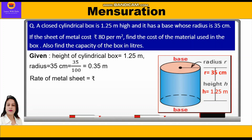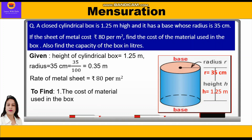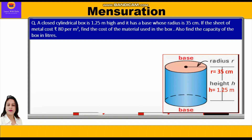So the three things given to us are the height, radius, and the rate. We have to find the cost of the material used in the box and also the capacity of the cylindrical box in liters. Now let's start with the solution. The area of metal used, which we can also call the total surface area of the box, is given by the formula 2πr² + 2πrh.